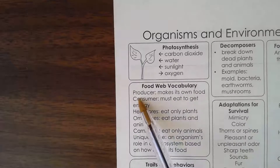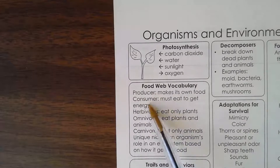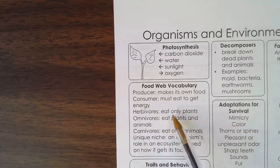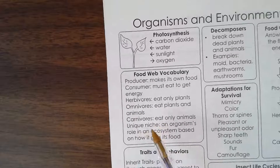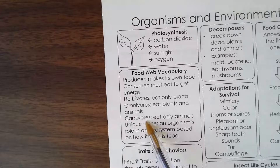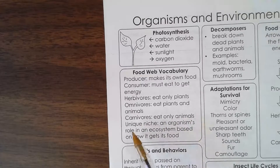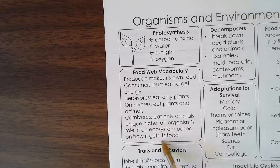Food web vocabulary. A producer makes its own food. A consumer must eat to get energy — that is us. Herbivores eat only plants. Omnivores eat plants and animals. Carnivores eat only animals. And the unique niche is an organism's role in an ecosystem based on how it gets its food.